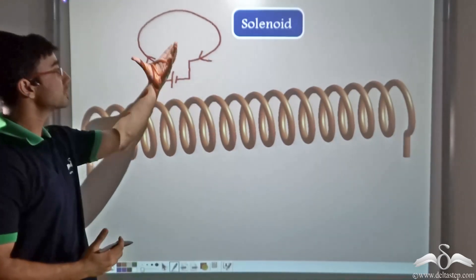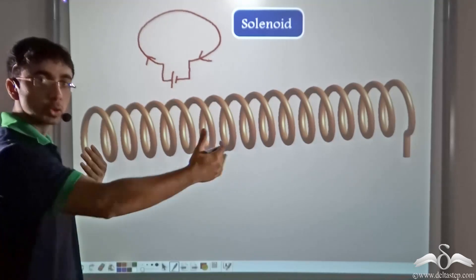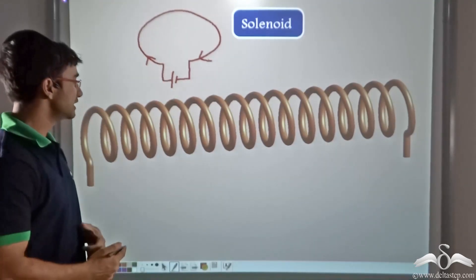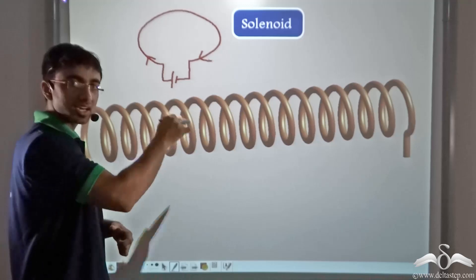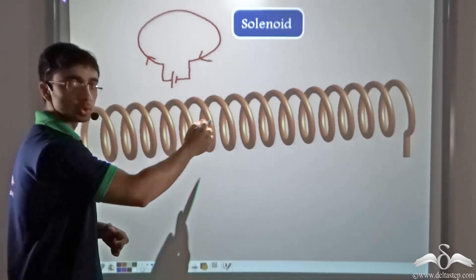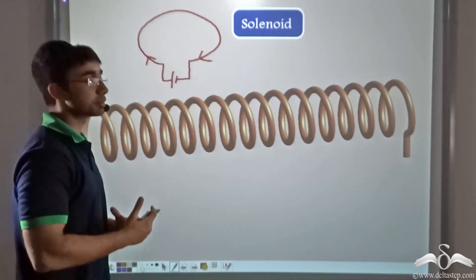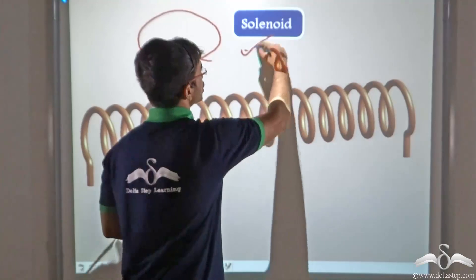Now what if in place of a single loop we have multiple loops one after the other? This can be achieved if we continuously twist a conductor in the manner shown. The structure which we obtain is known as a solenoid.